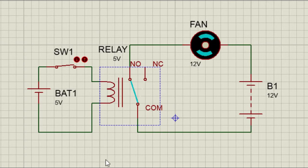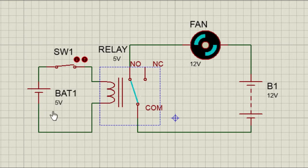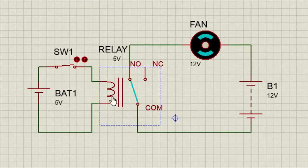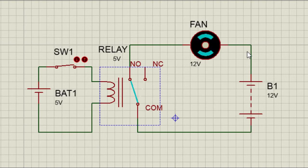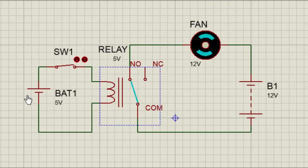This is a nice feature because a small power, especially from a PIC microcontroller, could be used to control the relay. In turn, the relay could switch on a heavy load which could require more current or voltage than the microcontroller is able to supply.